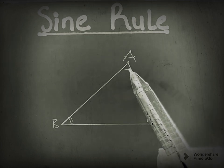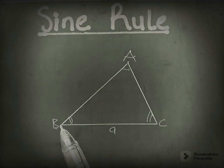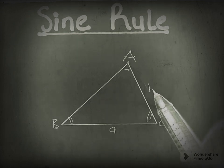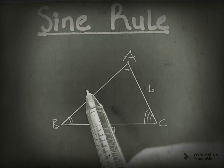The side opposite to this angle, we call it small a. The side opposite to this angle, we call it small b. The side opposite to this angle, we call it small c.